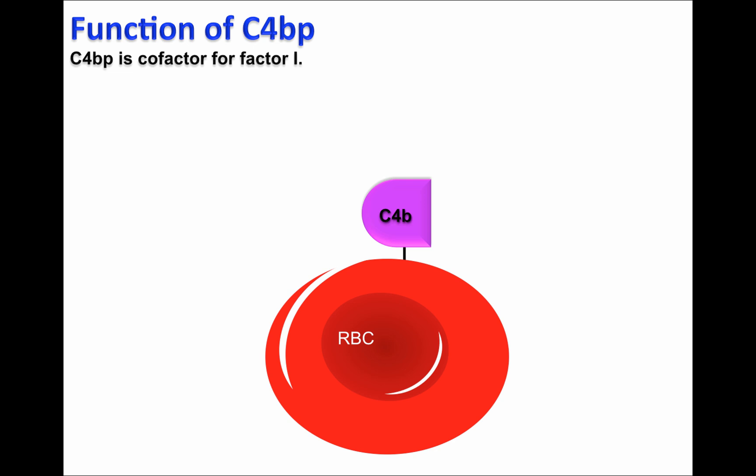We have shown in previous videos that the deposition of C4B may lead to the formation of the membrane attack complex, or MAC, on the cell surface of red blood cells. If that happens, the red blood cells will be lysed.